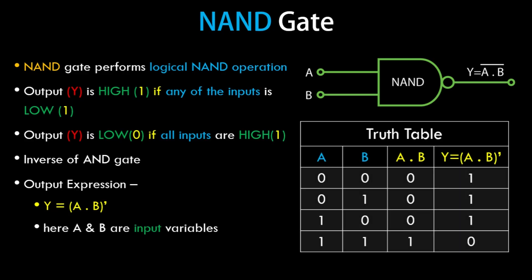Here's the truth table. We have input values A and B. We first calculate the AND operation between these two variables A and B. Since it is a NAND operation, which is opposite to the AND, we take a complement and get the final result in the last column, which is given by A AND B the whole complement.